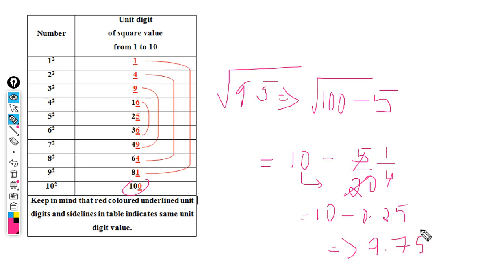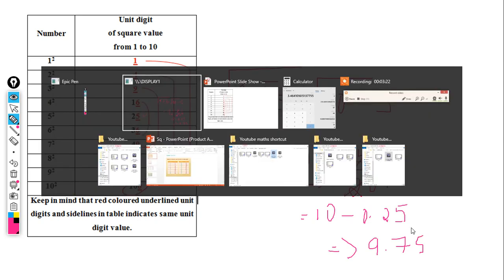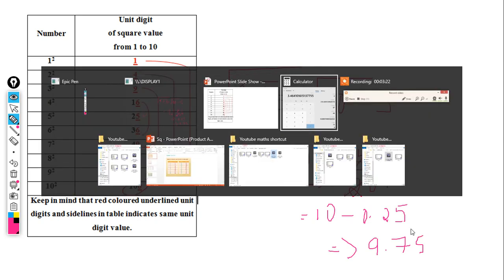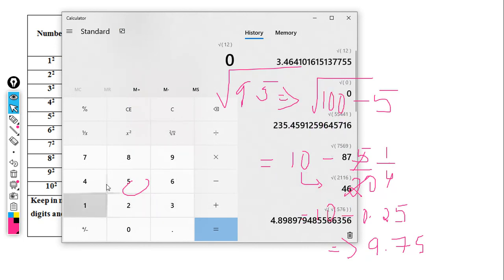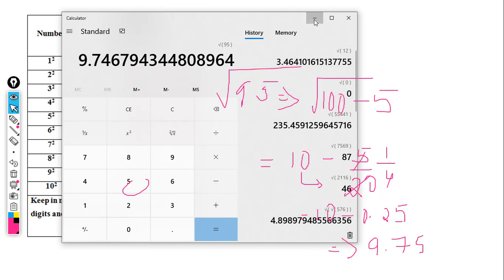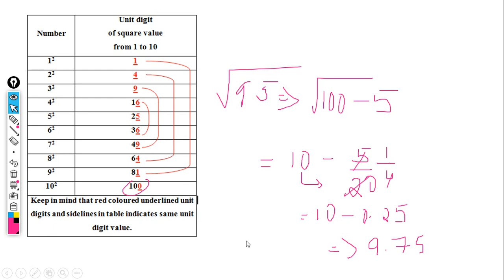So we get 10 minus 5 by 20, which equals 10 minus 0.25, giving us 9.75. Let's calculate: the square root of 95 equals 9.746, which is approximately 9.75. The answer is correct.